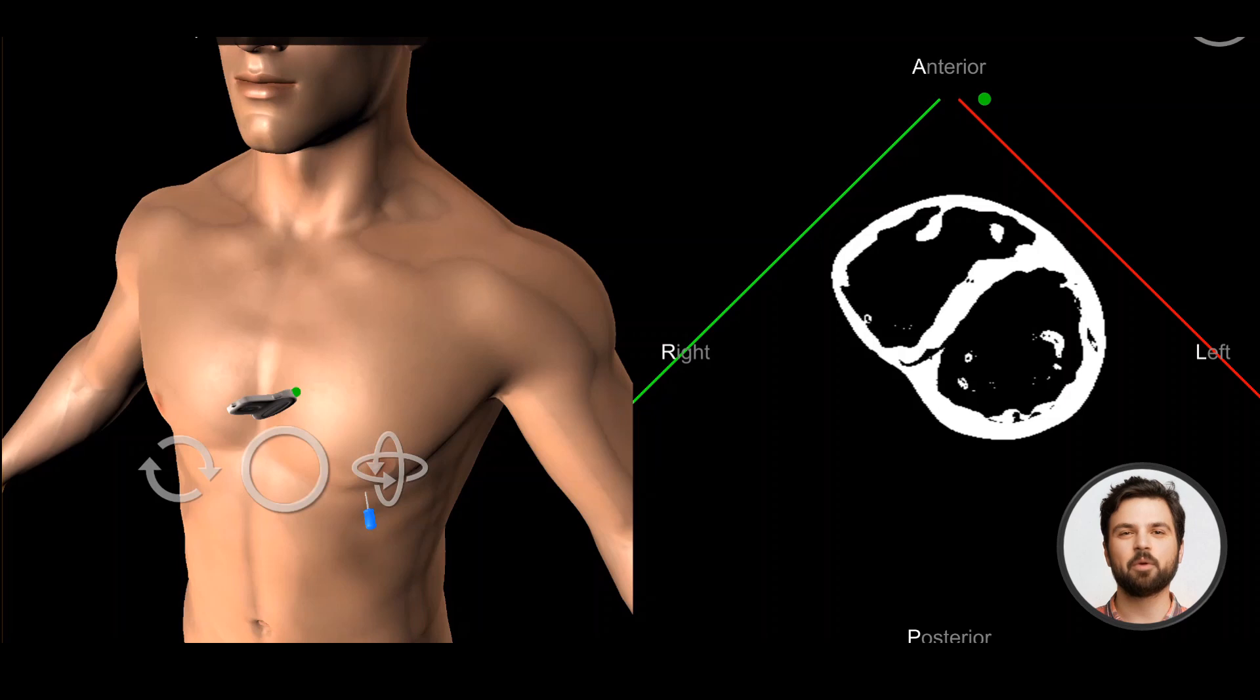Let's look at the apical 4 chamber view. The patient is positioned as before in the left lateral decubitus position.